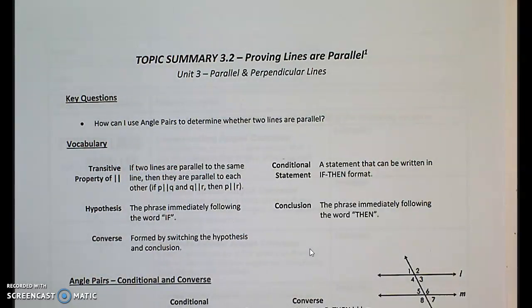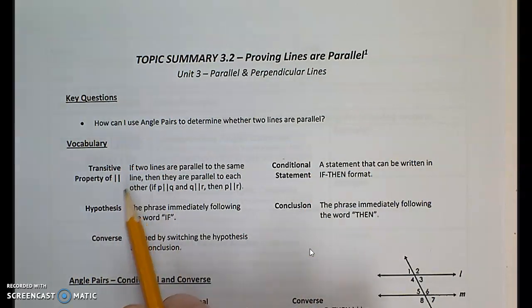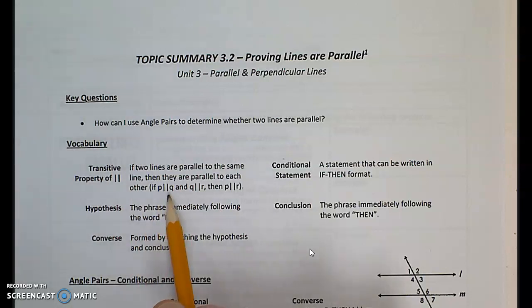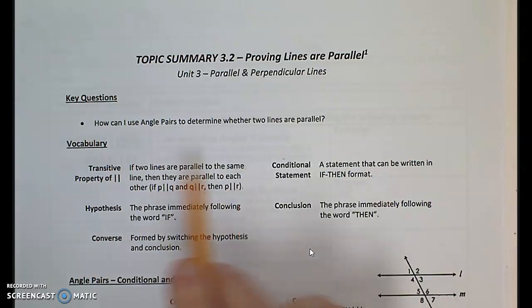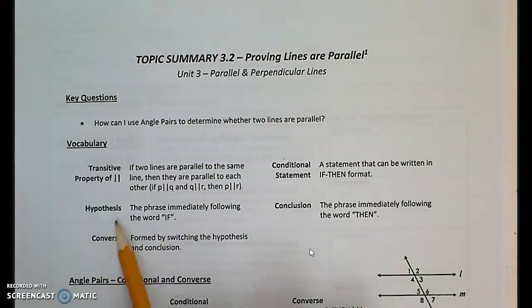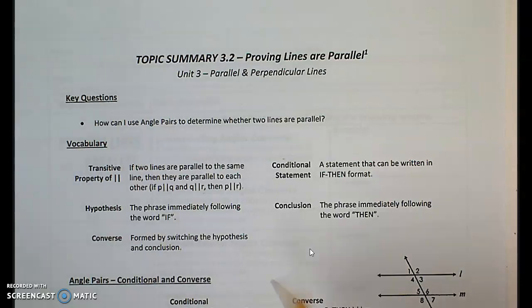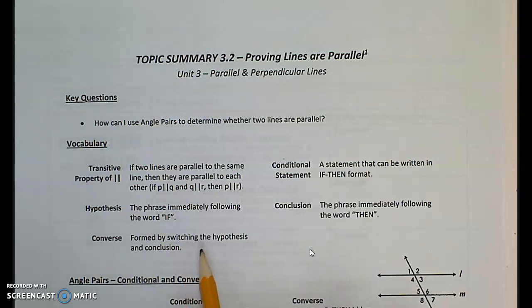How can we use angle pairs to determine whether two lines are parallel? Something new here is the transitive property of parallel lines: if line P is parallel to Q and Q is parallel to R, then P is also parallel to R. We also review conditional statements — written in if-then format, either true or false. The hypothesis follows the 'if,' and the conclusion follows the 'then.' In this packet we'll use the converse, which is formed by switching the hypothesis and conclusion: instead of 'if P then Q,' we say 'if Q then P.'